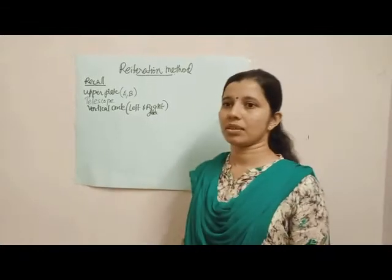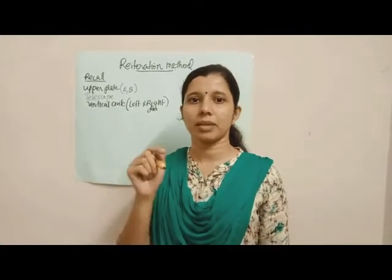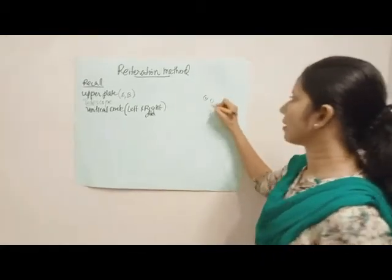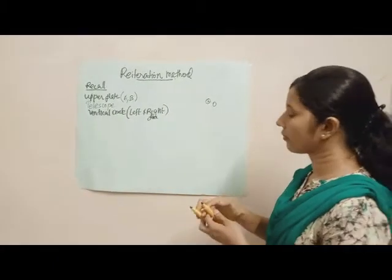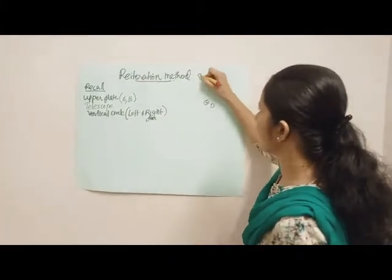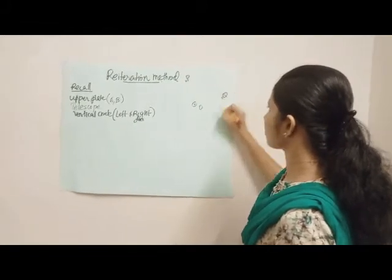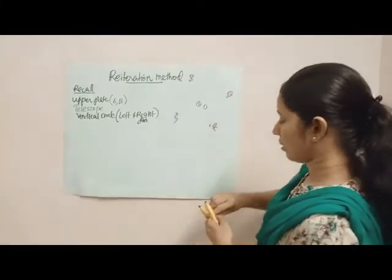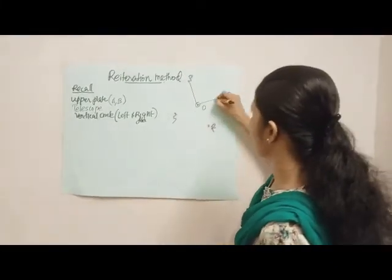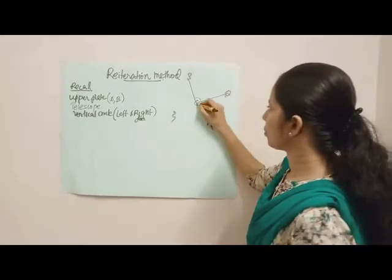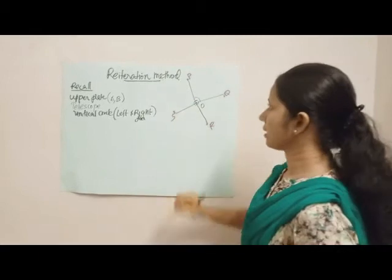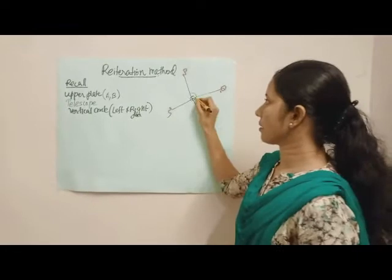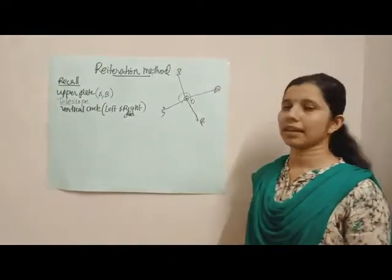The re-iteration method is used when several angles are to be measured from a single point. For example, let O be a point on the ground surface. Similarly, there are different points — P, Q, R, and S. It is required to measure the angles POQ, QOR, ROS, and SOP. In this particular situation, we use the method of re-iteration.